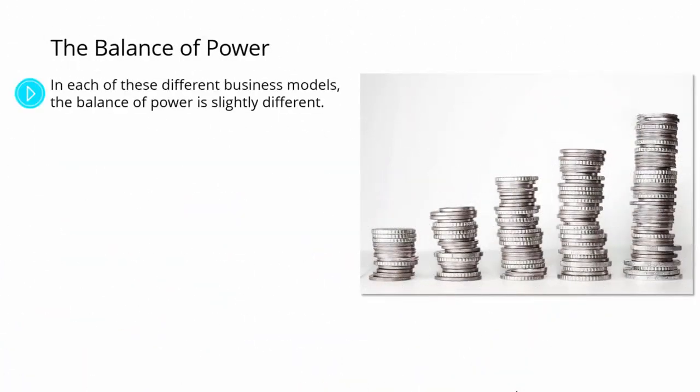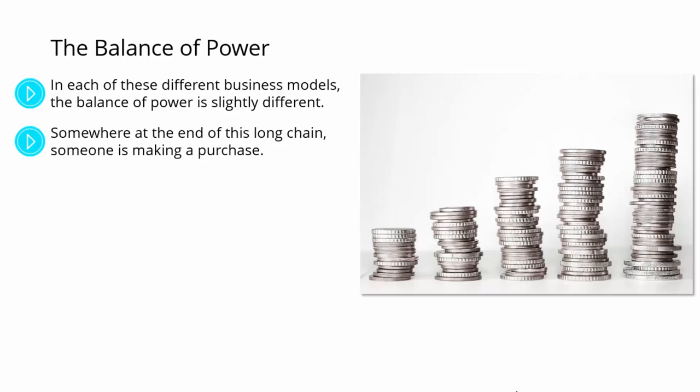The balance of power. In each of these different business models, the balance of power is slightly different. Your aim is to ensure that the balance is in your favor as often as possible. For example, if you are making money from PPC, you're right at the bottom of the ladder. Somewhere at the end of this long chain, someone is making a purchase. AdSense means that an advertiser is paying Google for each visitor, and Google is then giving you a percentage of that money. Not only do you have Google as a middleman, but you are also losing a customer — normally for only a few cents. That customer is then heading over to another website where they are making the other company more money. You know that on average, each customer is worth more to the advertiser than they are to you; otherwise, the advertiser wouldn't have the money to pay for your adverts.